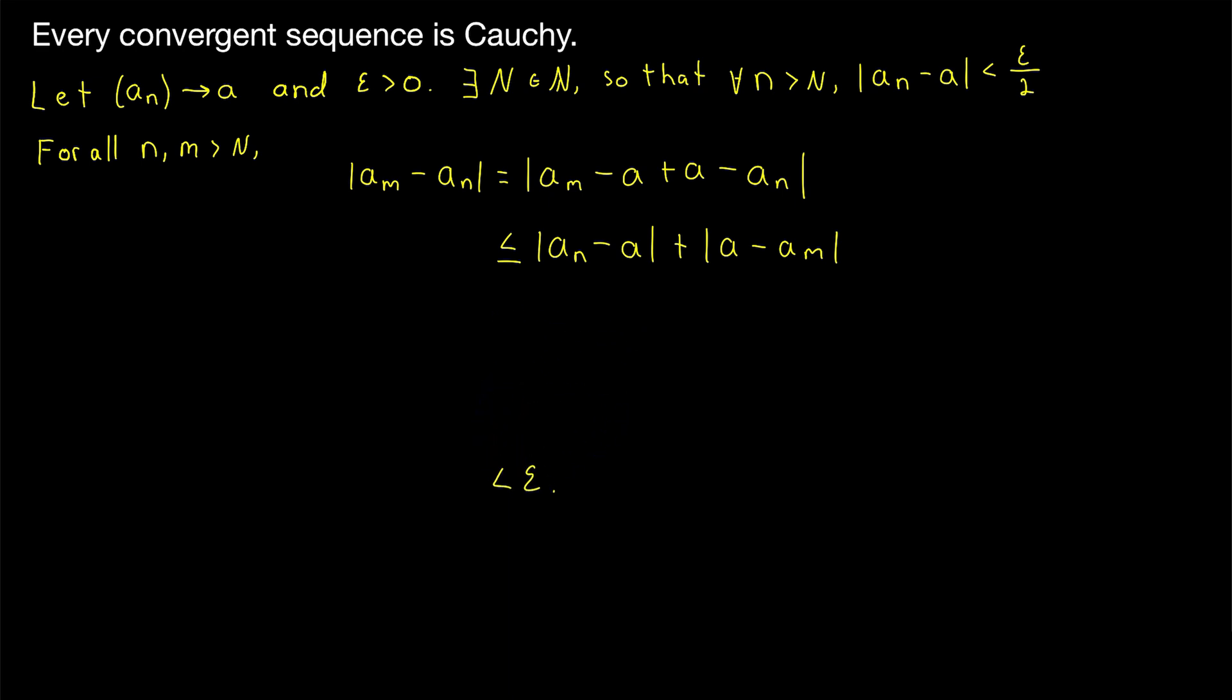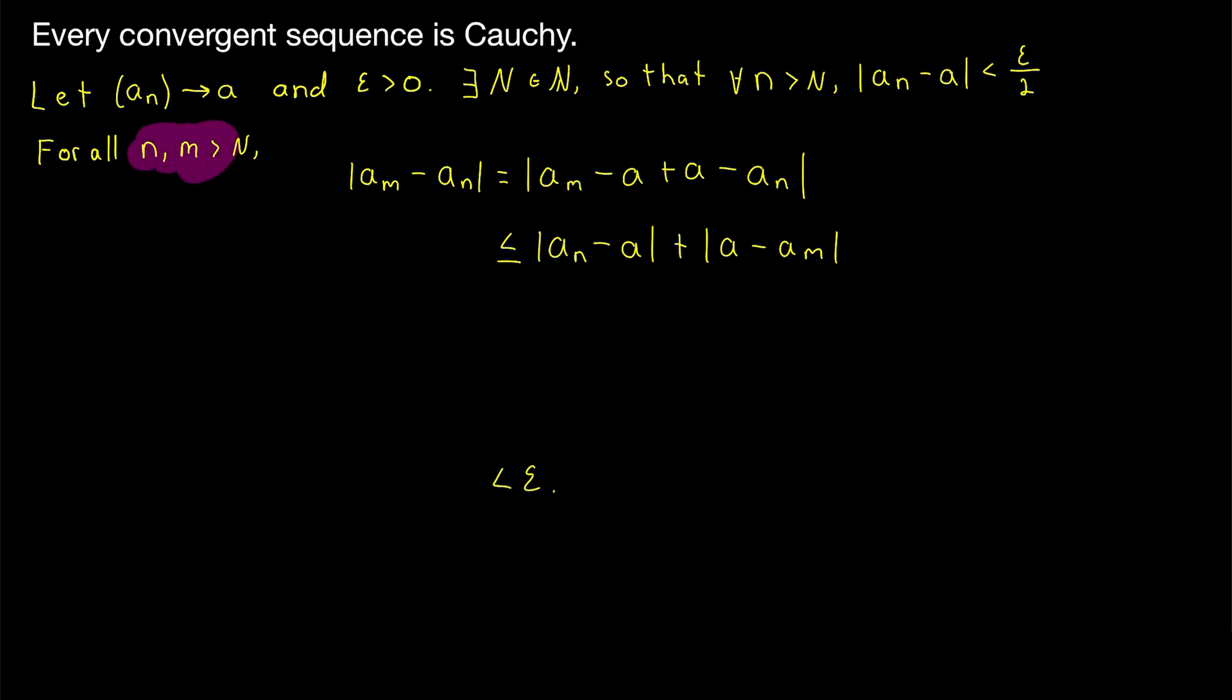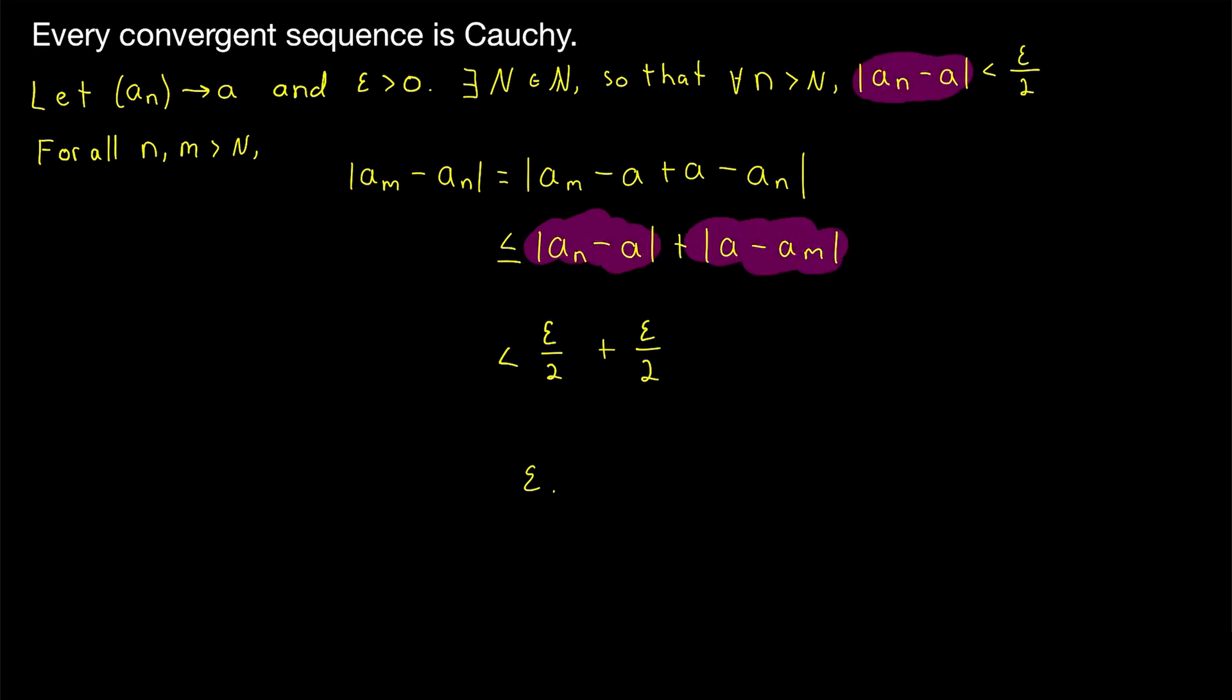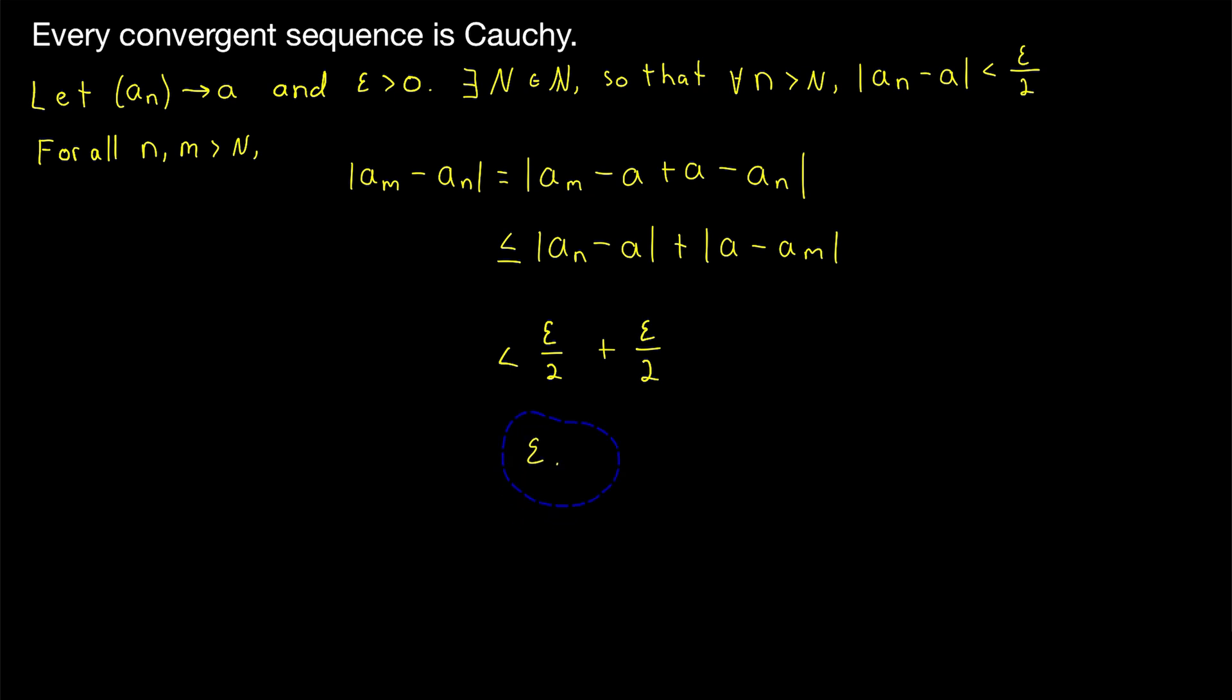Thus when we take terms of the sequence An and Am after the big Nth term, we are guaranteed that this is less than epsilon over 2. Again, that's because both of these expressions are distances between terms of the sequence and the limit after the big Nth term. So both of these are less than epsilon over 2. Thus their sum is less than epsilon over 2 plus epsilon over 2, and of course epsilon over 2 plus epsilon over 2 is epsilon.